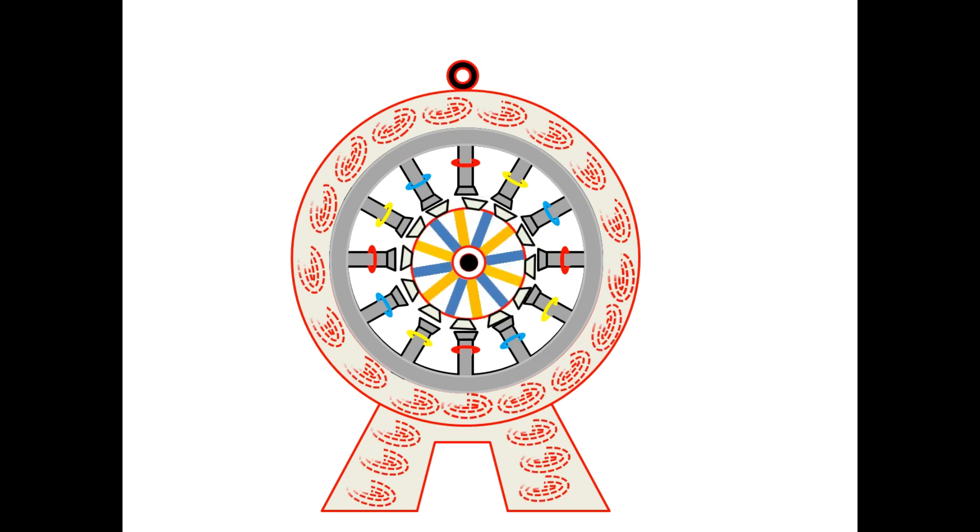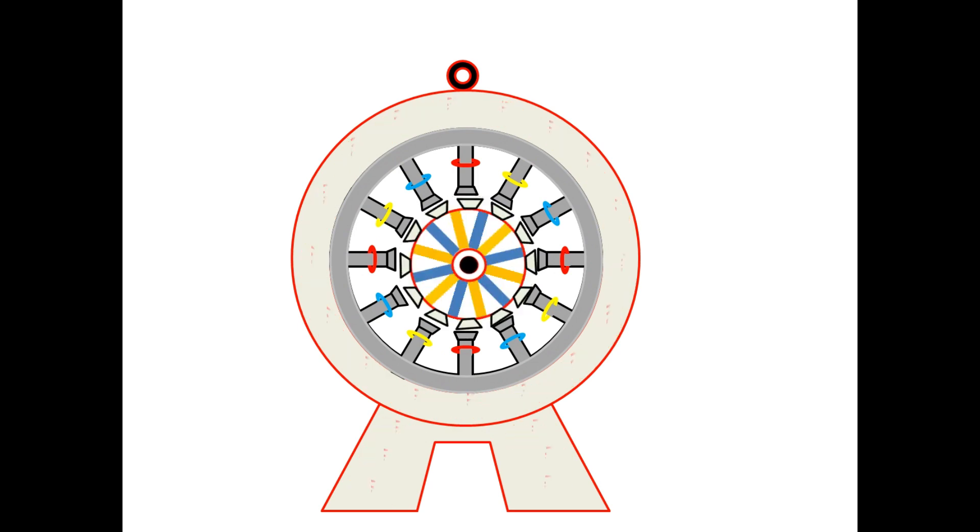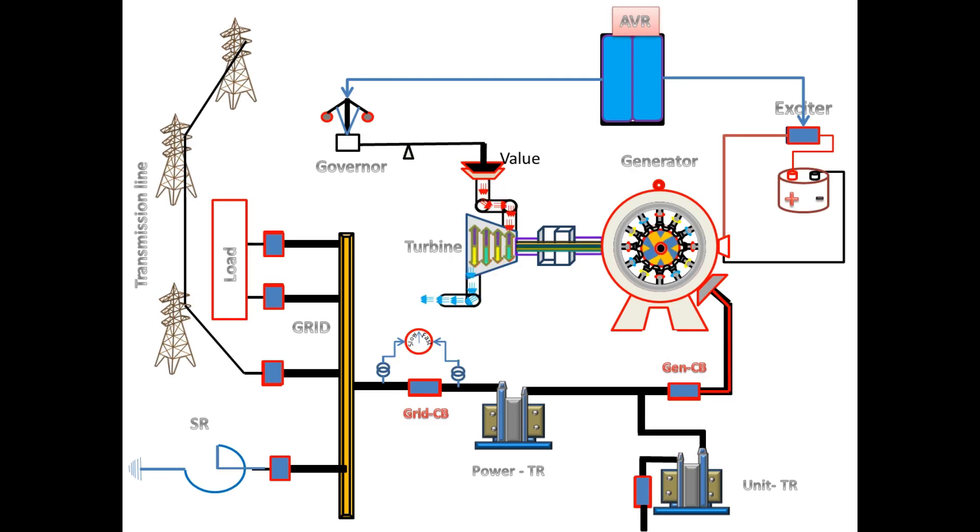So wherever this flux cuts on iron or metal, it produces the eddy current on it. This is the short note on over flux. Now we will see the causes of over flux or over excitation.